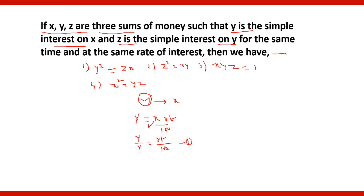Let this be number 1. The same way it is said that Z is the simple interest on Y. Therefore Z will be equal to Y RT upon 100. Take Y to the other side, you will get Z by Y is equal to RT upon 100. And this is number 2. From 1 and 2, we see that both equal RT upon 100.